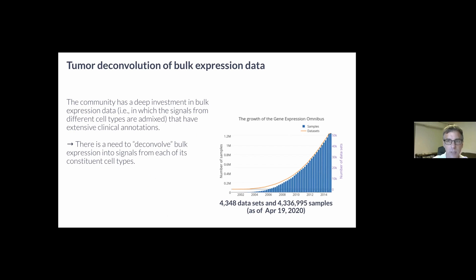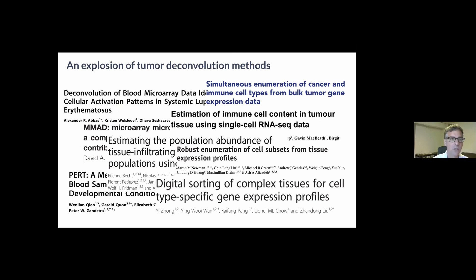The field has been greatly interested in using deconvolution methods to predict levels of immune cells from the wealth of bulk gene expression data that have already been generated. For example, as of yesterday there are over four million samples in GEO, and both Alex and Rong Shan have already alluded to this explosion over the past four or five years.